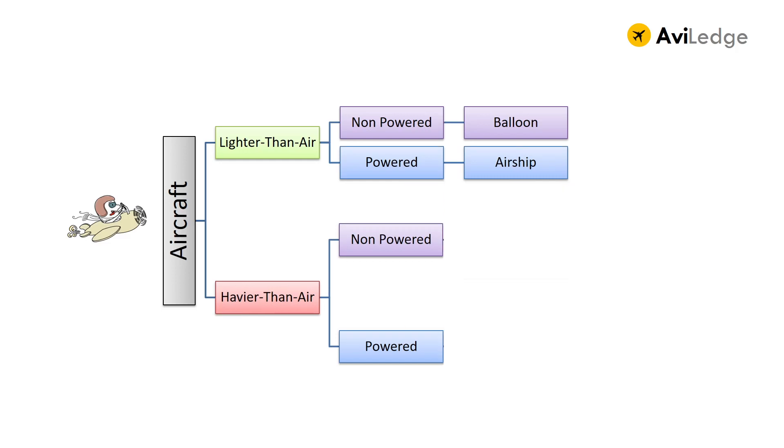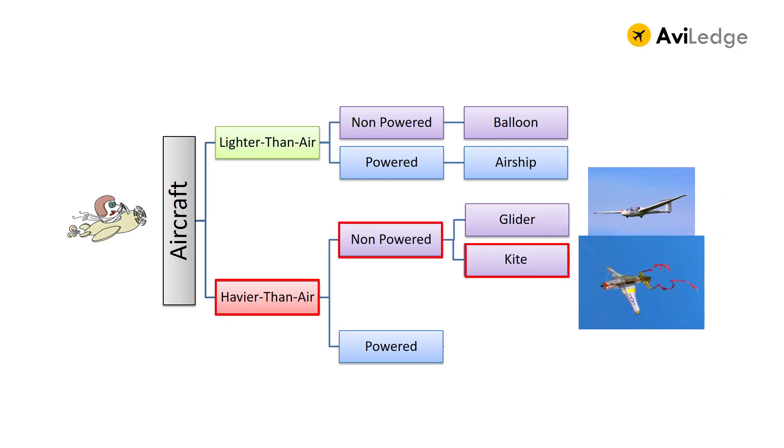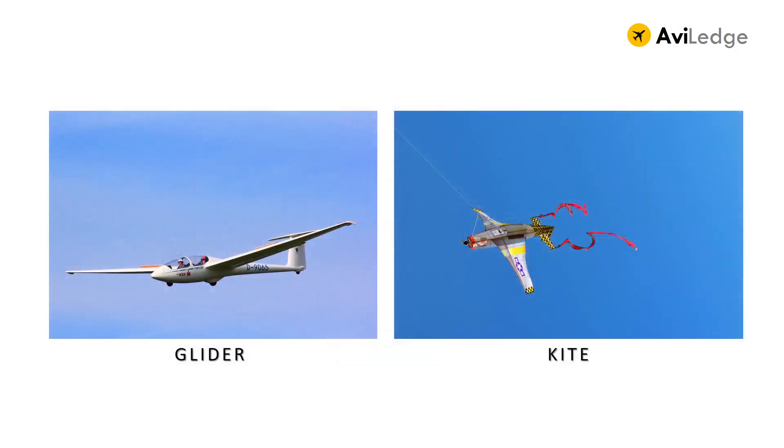Coming to the heavier-than-air and non-powered category, it includes glider and kites. Having no engines, glider and kite make use of the air buoyancy effect to stay in air by flying at places where the air is rising, like in the valleys near the mountain slopes or in the weather conditions of rising air currents.